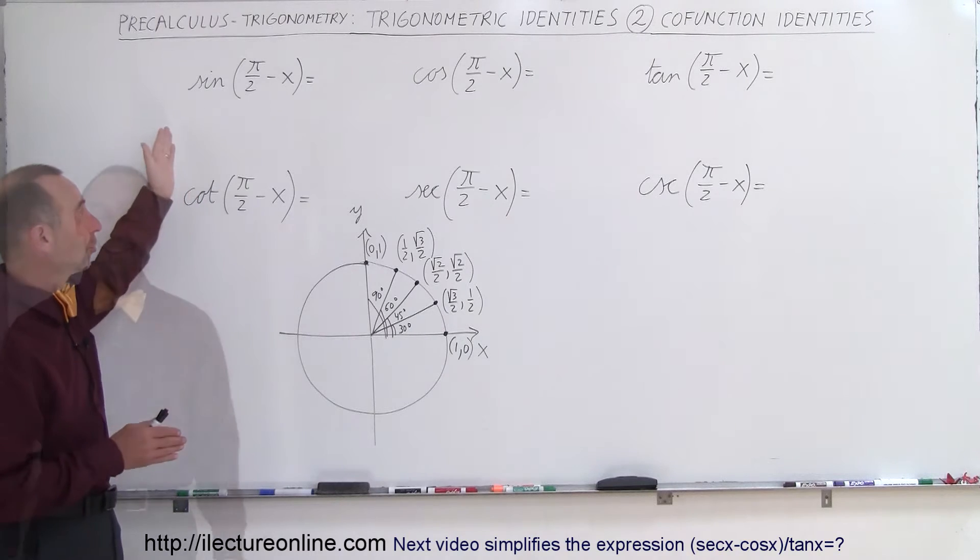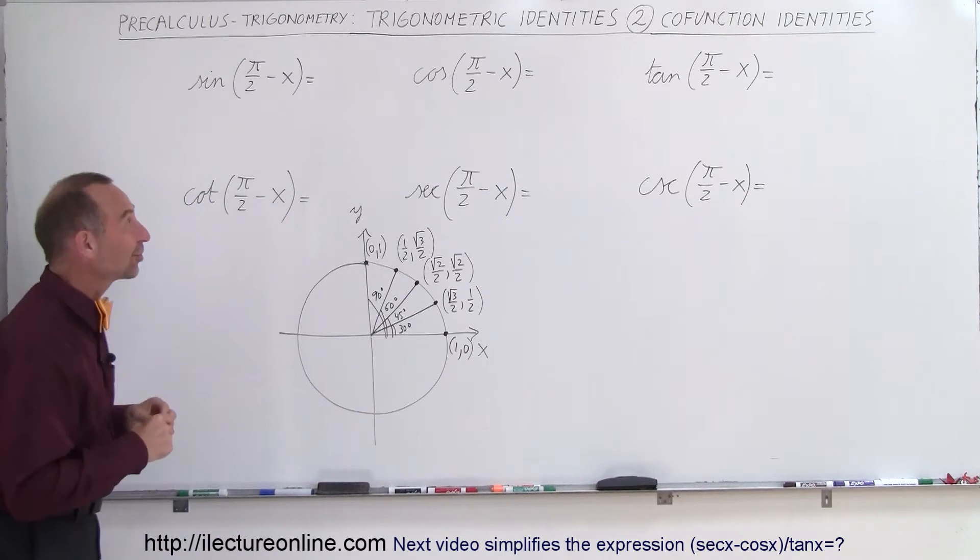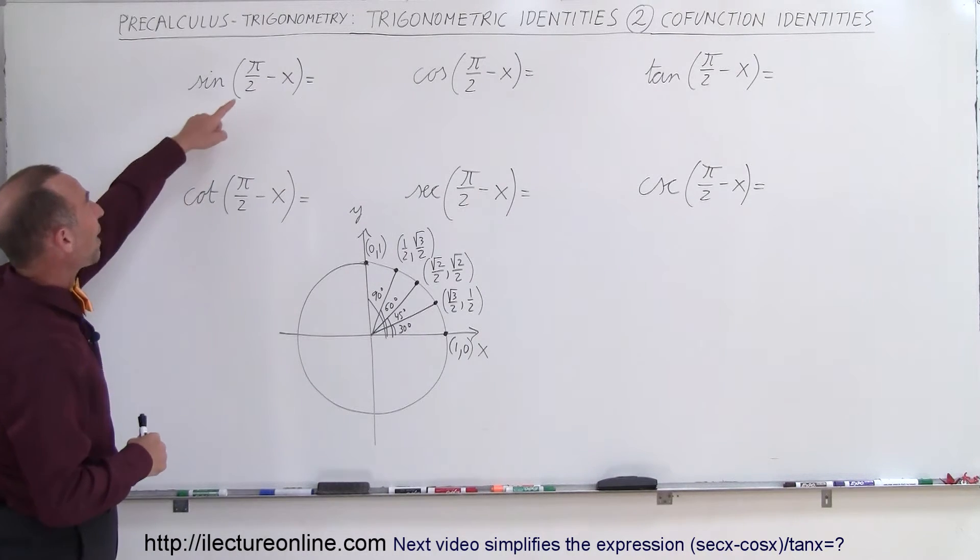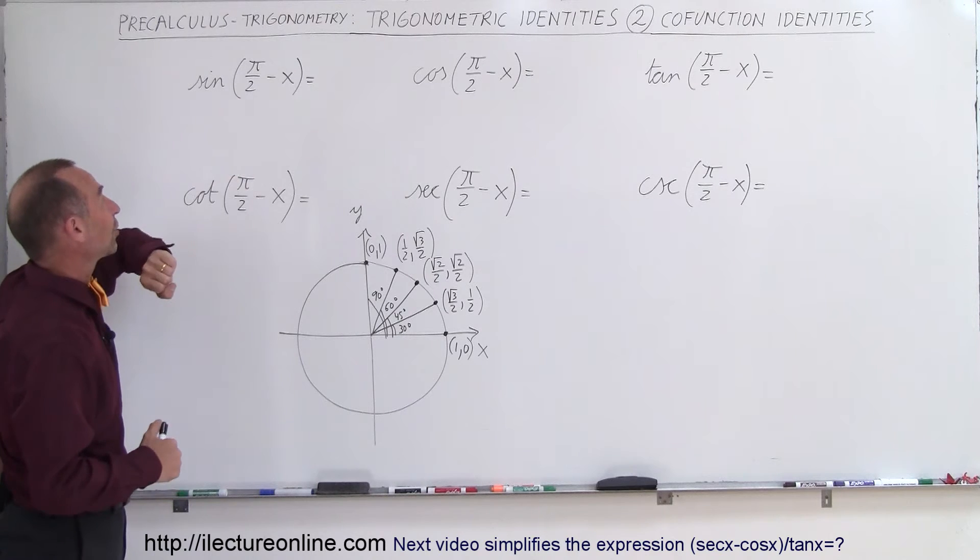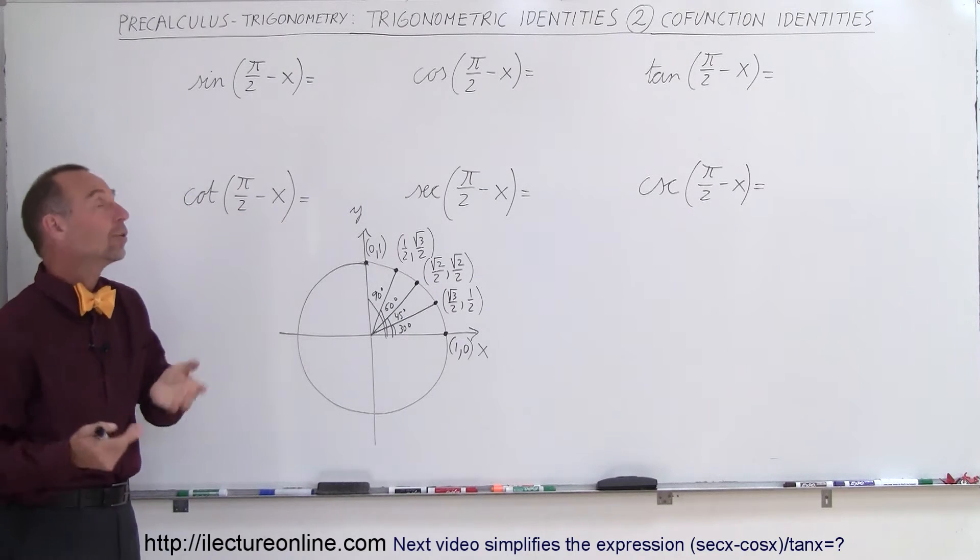So first I'm going to give you the solutions to the six trigonometric functions where we take pi over 2 and subtract the angle from it. So pi over 2 of course is 90 degrees.